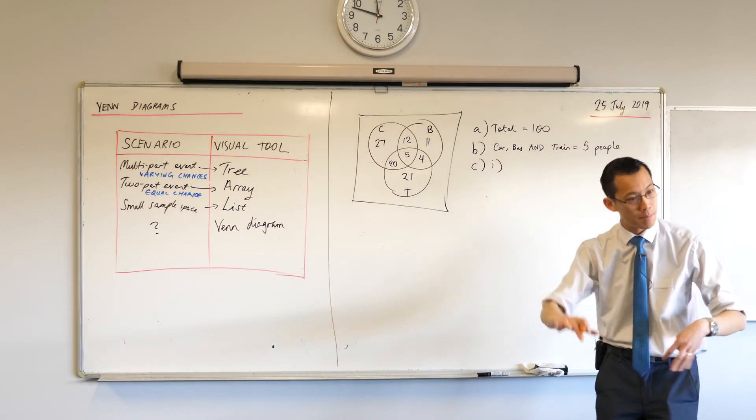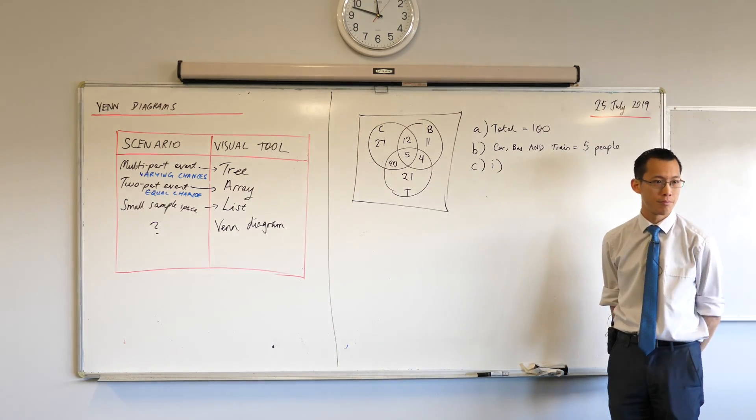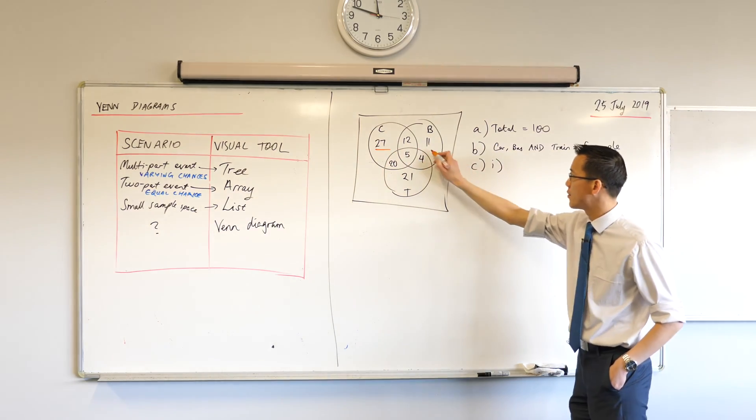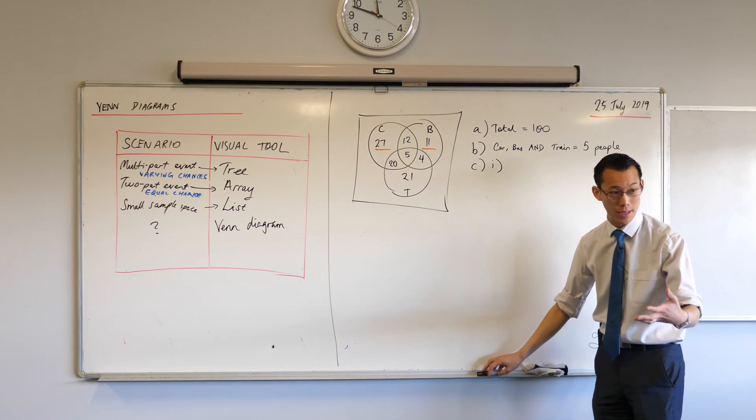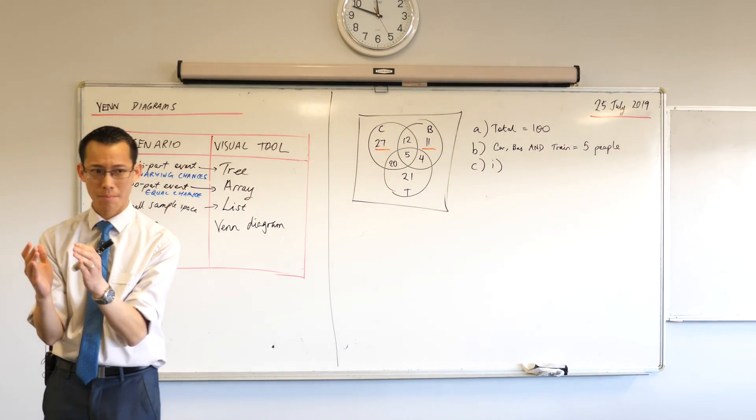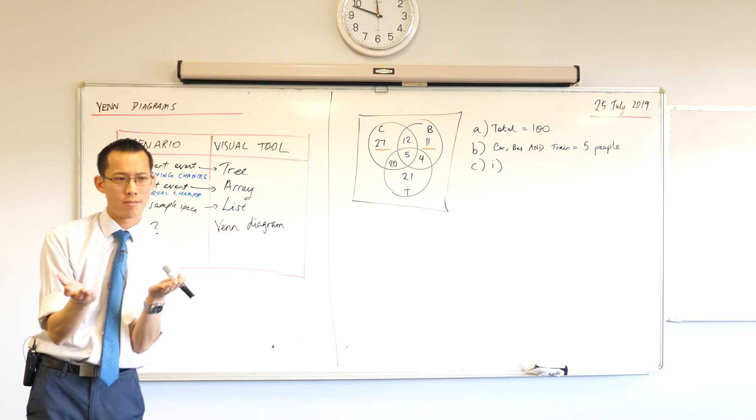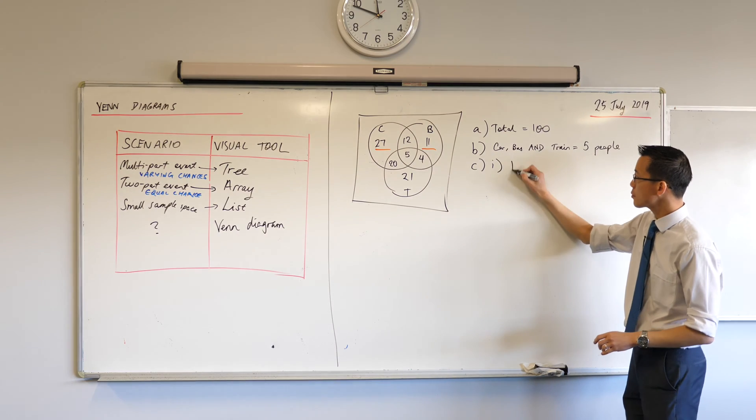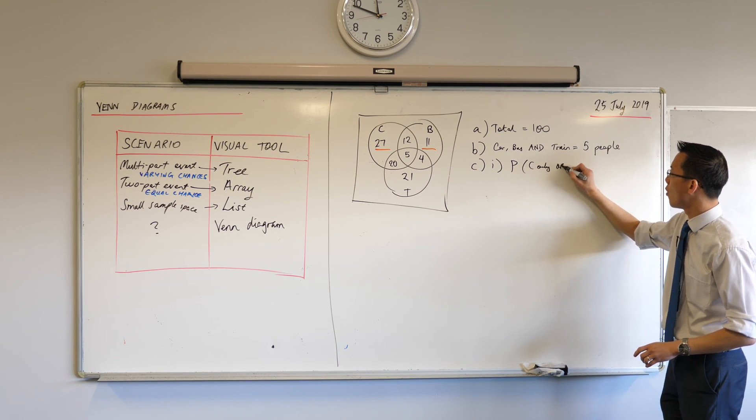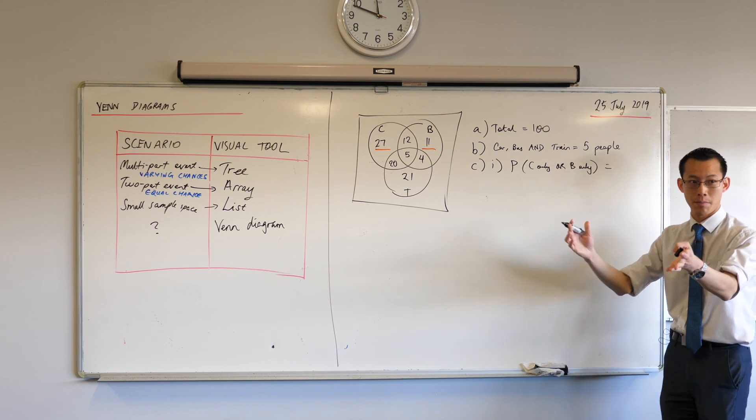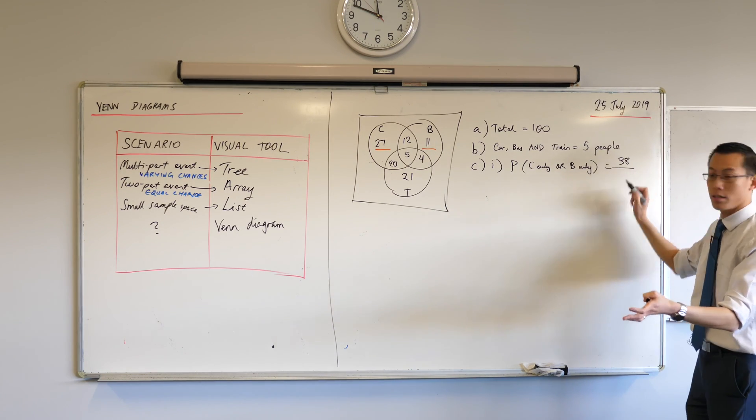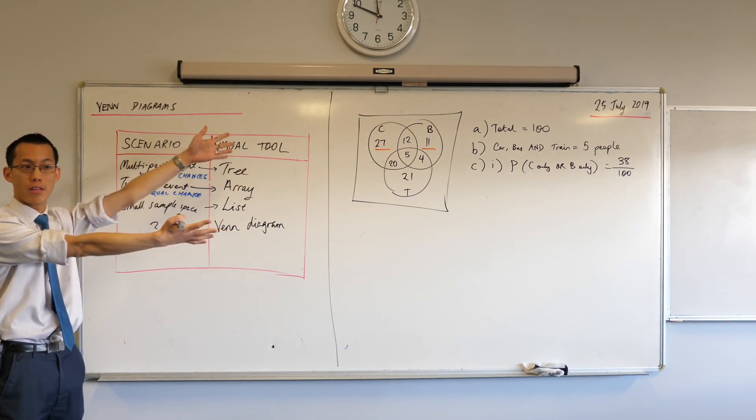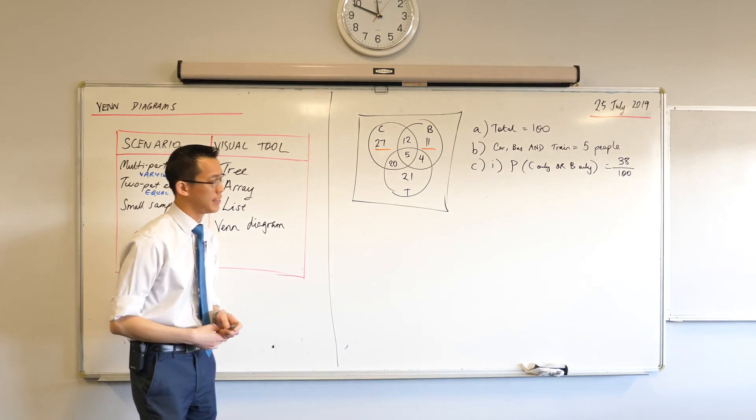This is two different groups of people. There's the car only people, and the bus only people. Which number is the car only people? Very good, 27. Where are the bus only people? 11. When you see the word OR, what's the operation that goes in between those? It's going to be addition. So the 27 and the 11, the probability of getting car only or bus only is 27 plus 11, which equals 38. And then what's the sample space? 100. Fantastic.